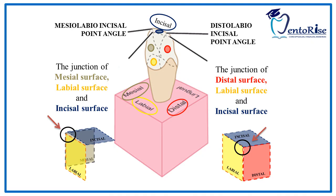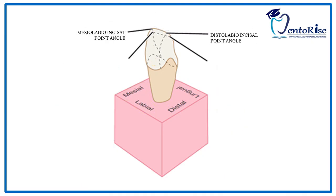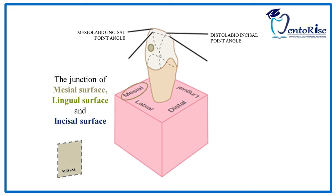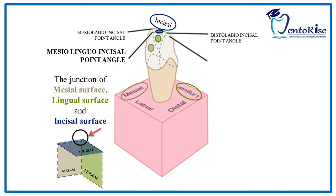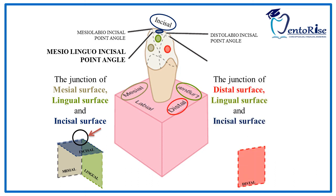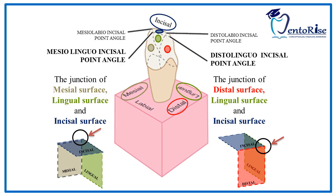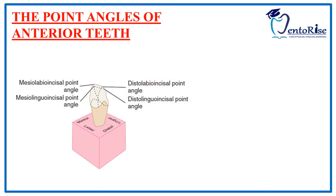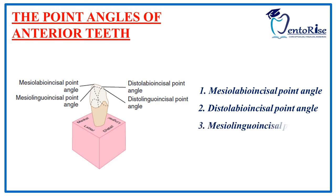Notice the labeling present in the figure. Likewise, the junction of the mesial surface represented in grey, lingual surface represented in green, and incisal surface represented in blue forms the mesio-linguo-incisal point angle. And the junction of the distal surface represented in red, lingual surface represented in green, and incisal surface represented in blue forms the disto-linguo-incisal point angle. Therefore, the four point angles of anterior teeth are: the mesio-labio-incisal, disto-labio-incisal, mesio-linguo-incisal, and disto-linguo-incisal point angles.